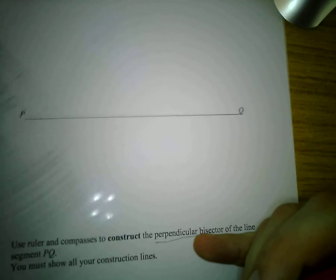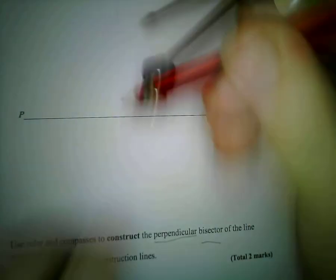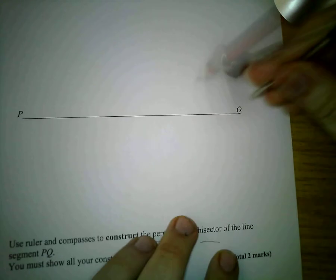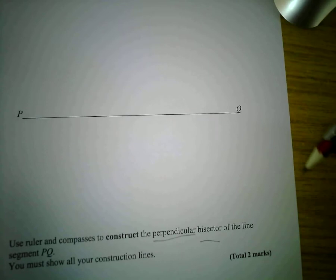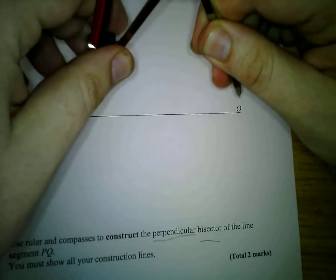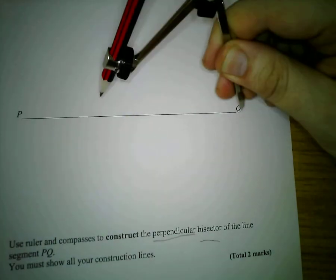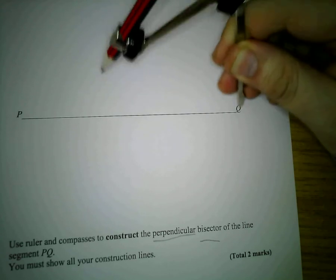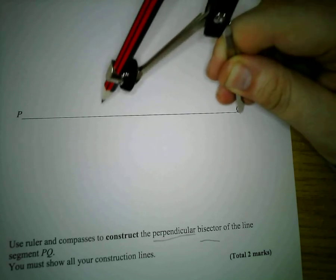First thing you need then is your pair of compasses and what you're going to do is you're going to look at the line and you're going to expand your compass out so they are wider than halfway on that line. So it needs to be wider than the halfway point.